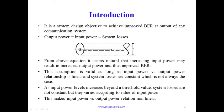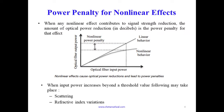As input power levels increase beyond a threshold value, system losses are not constant but vary according to the value of input power. This makes the input power versus output power relationship non-linear. As we can see in this curve, on the x-axis we have input power and on the y-axis output power. Ideally the relationship should be linear as depicted by the straight line, but in practice as soon as input power crosses a certain threshold value, this relationship tends to become non-linear.